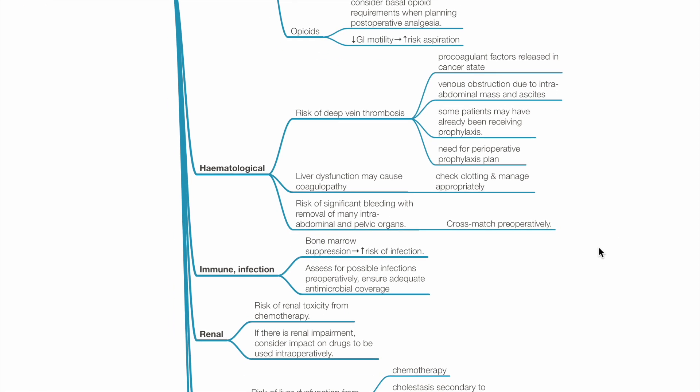Hematology. There is high risk of deep vein thrombosis due to procoagulant factors released by cancer and venous obstruction due to intra-abdominal mass and ascites. Some patients may already be receiving thromboprophylaxis. There is a need for perioperative thromboprophylaxis plan.